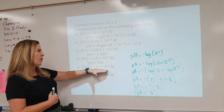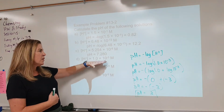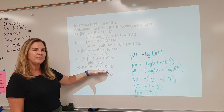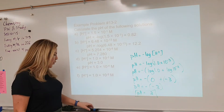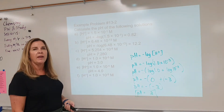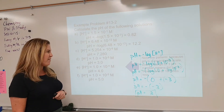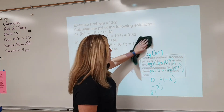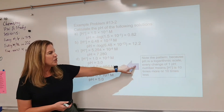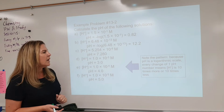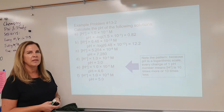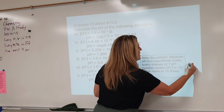With that in mind, look at a similar number — what is the pH of that solution? It should be 4. And the next one? Correctly, 5. Note the pattern: pH is a logarithmic scale. Every change of 1 pH unit means a concentration is 10 times more or 10 times less. Pay attention to that — it's always very important.